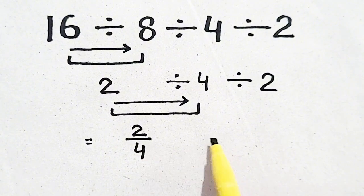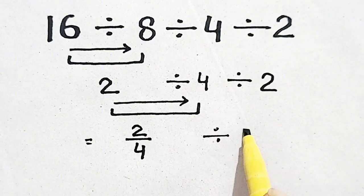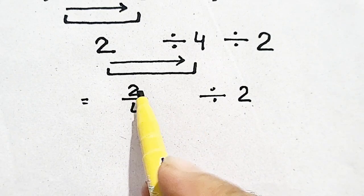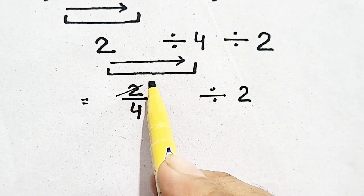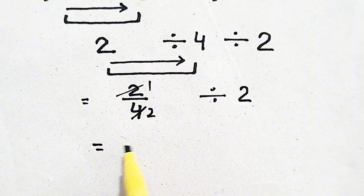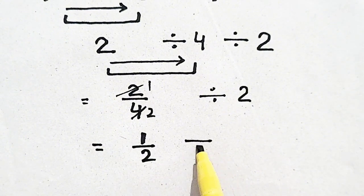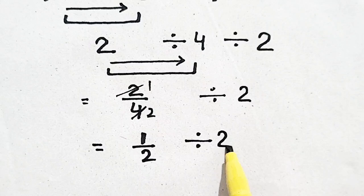2 by 4 divided by 2. So here is cancellation, and we will get 1 by 2 divided by 2.